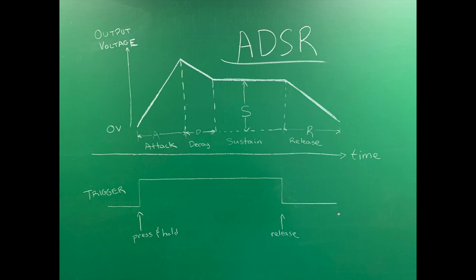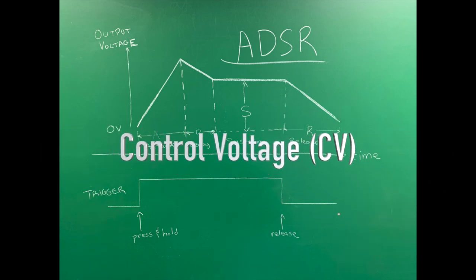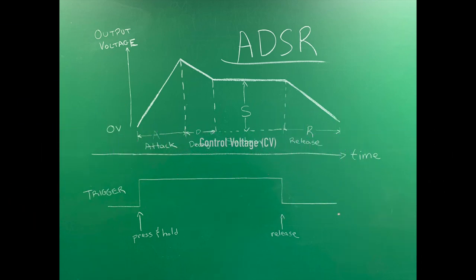Finally, the release time is how long it takes, once the gate signal is no longer present, for the output to drop from sustain level back to zero. The output of this circuit is referred to as a control voltage, or CV, and as the name suggests, it's used to control the behavior of other devices.